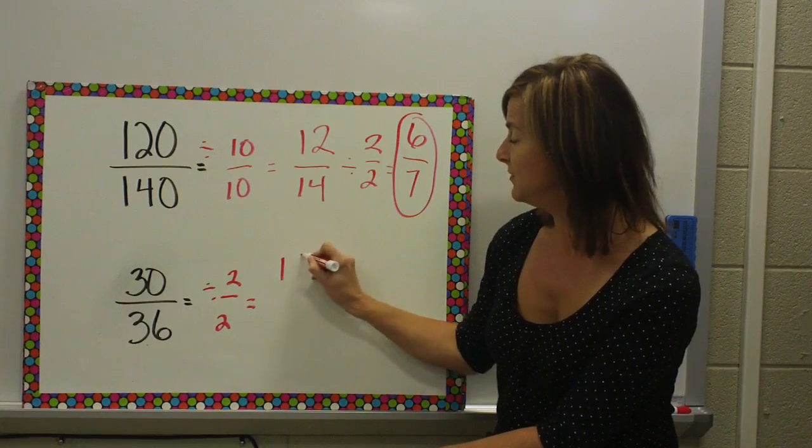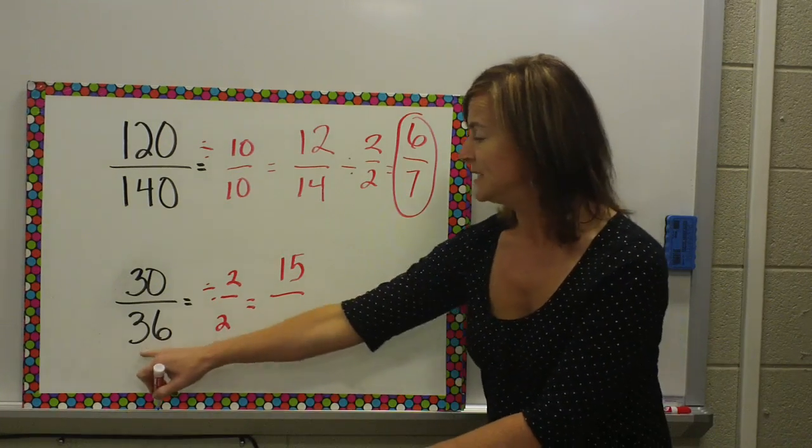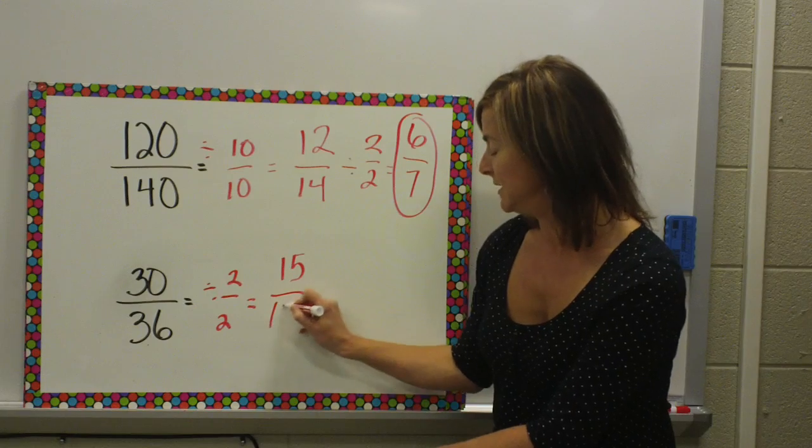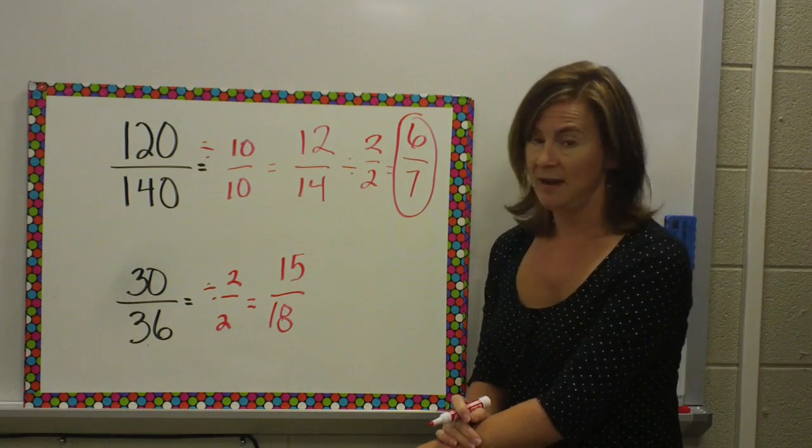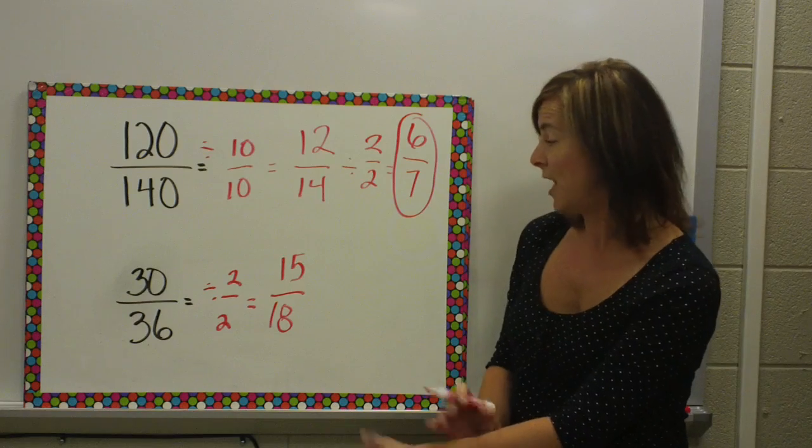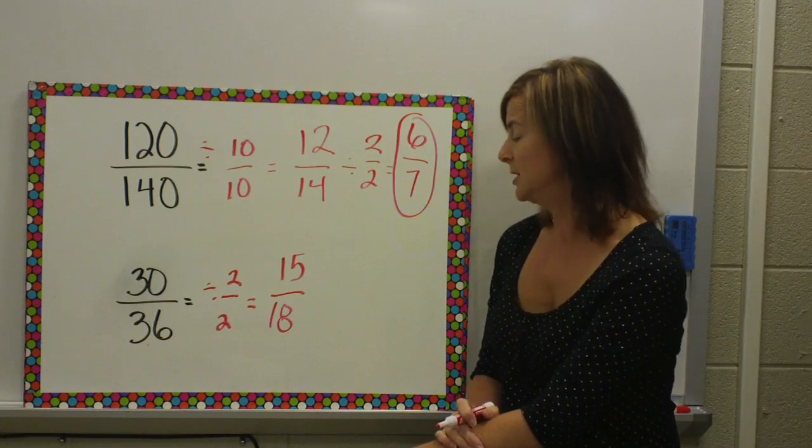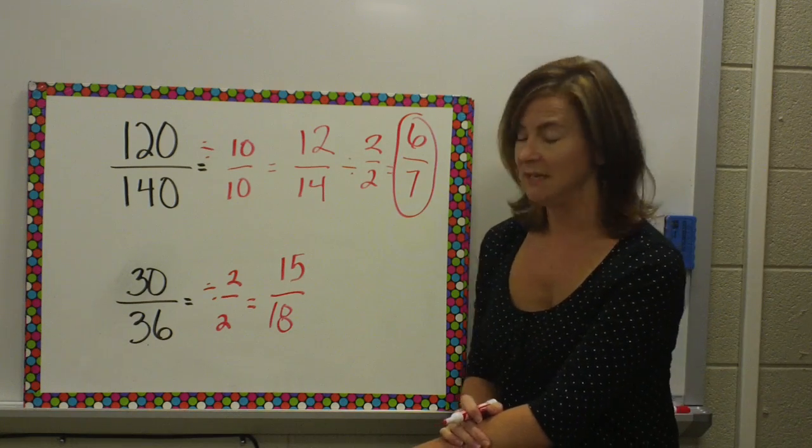30 divided by 2 is 15. 36 divided by 2 is 18. Now, I look at my new fraction, my rewritten fraction, and it says 15 18ths.